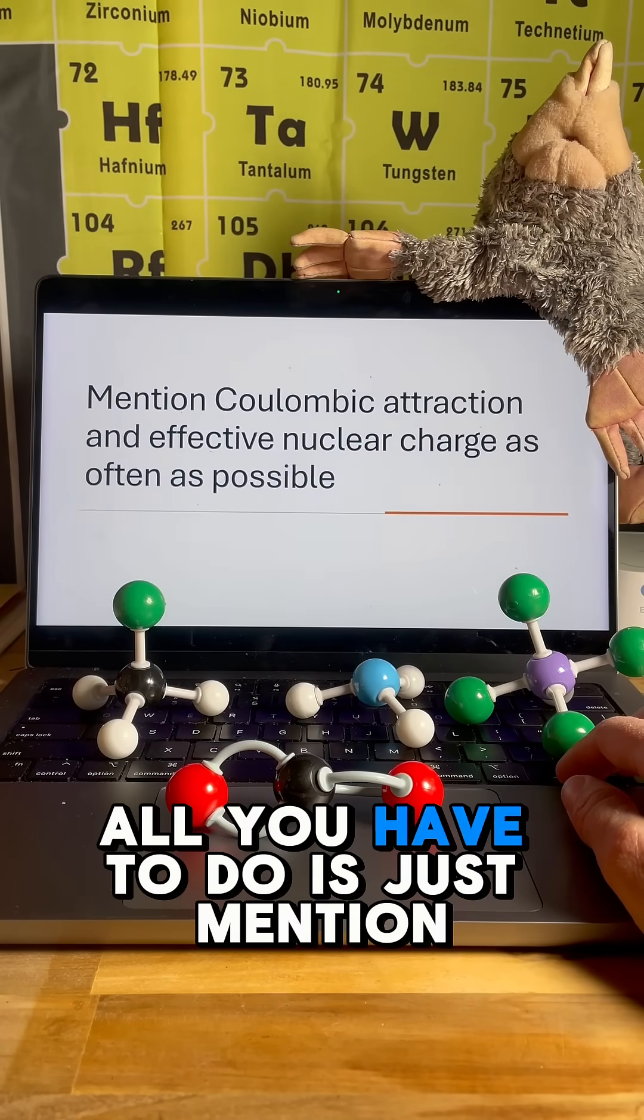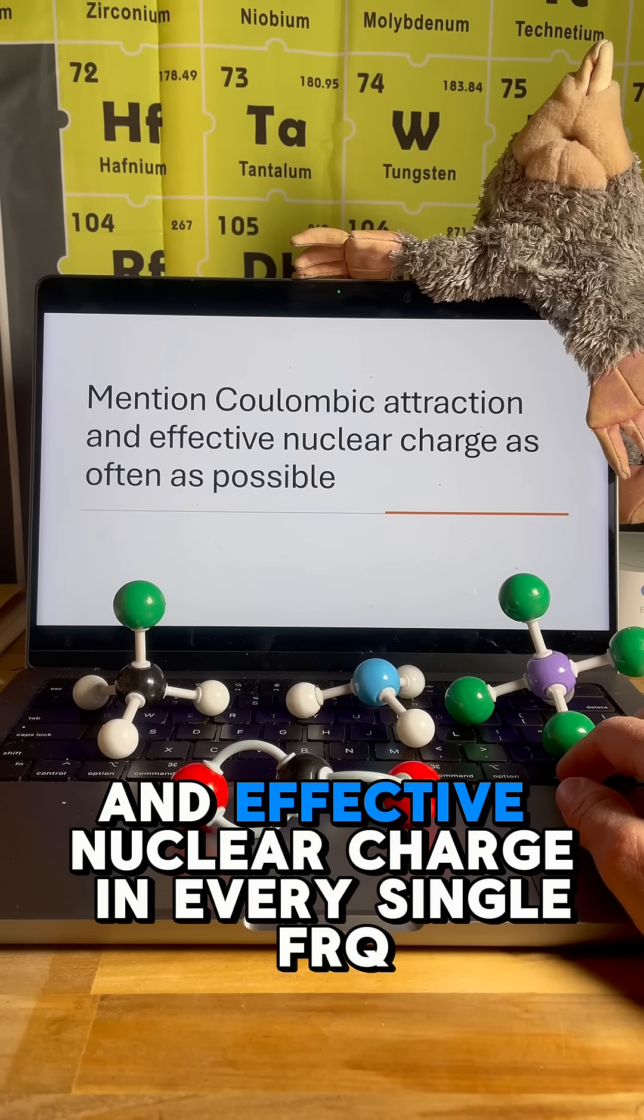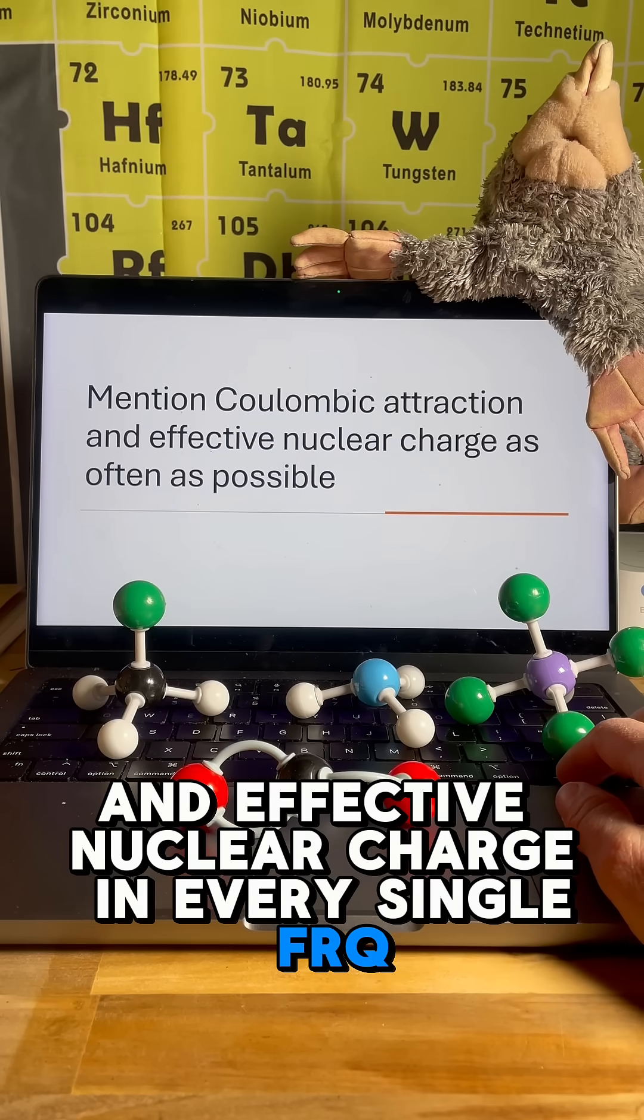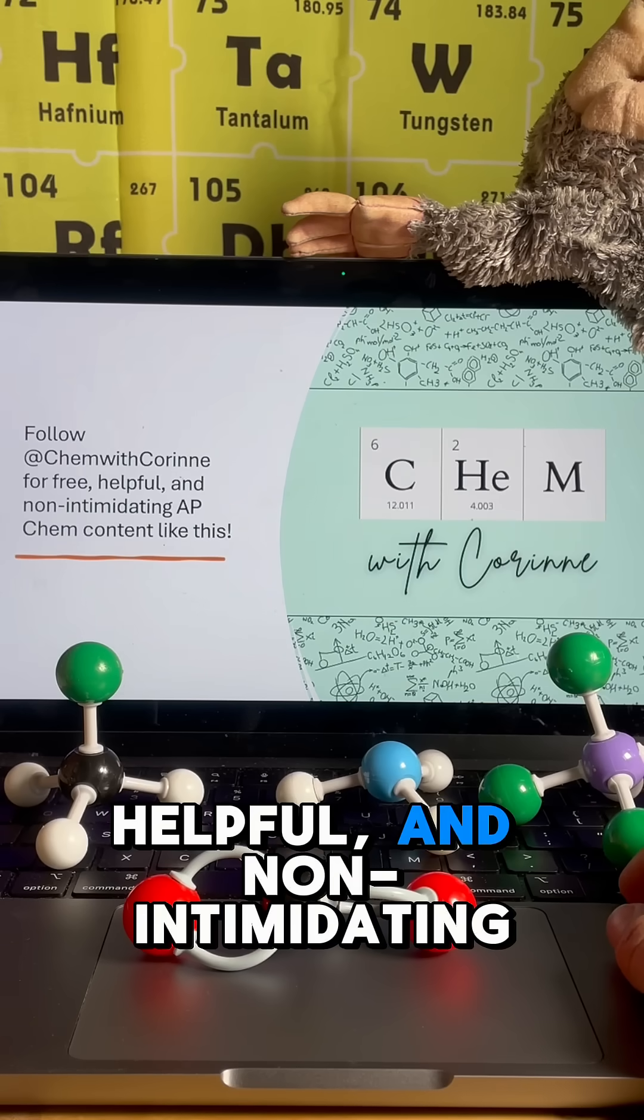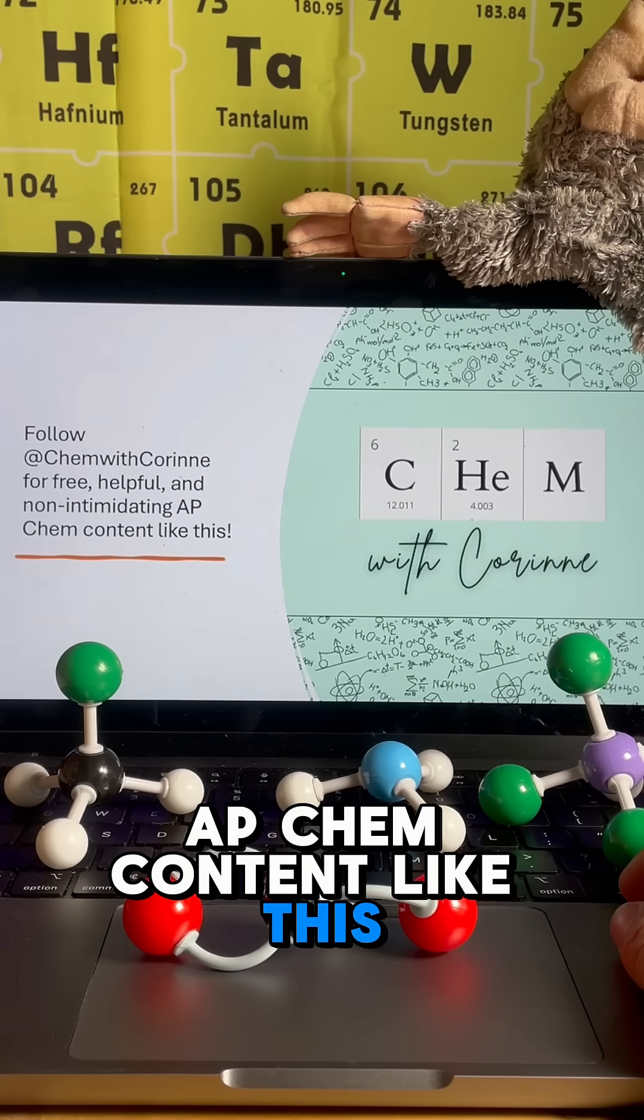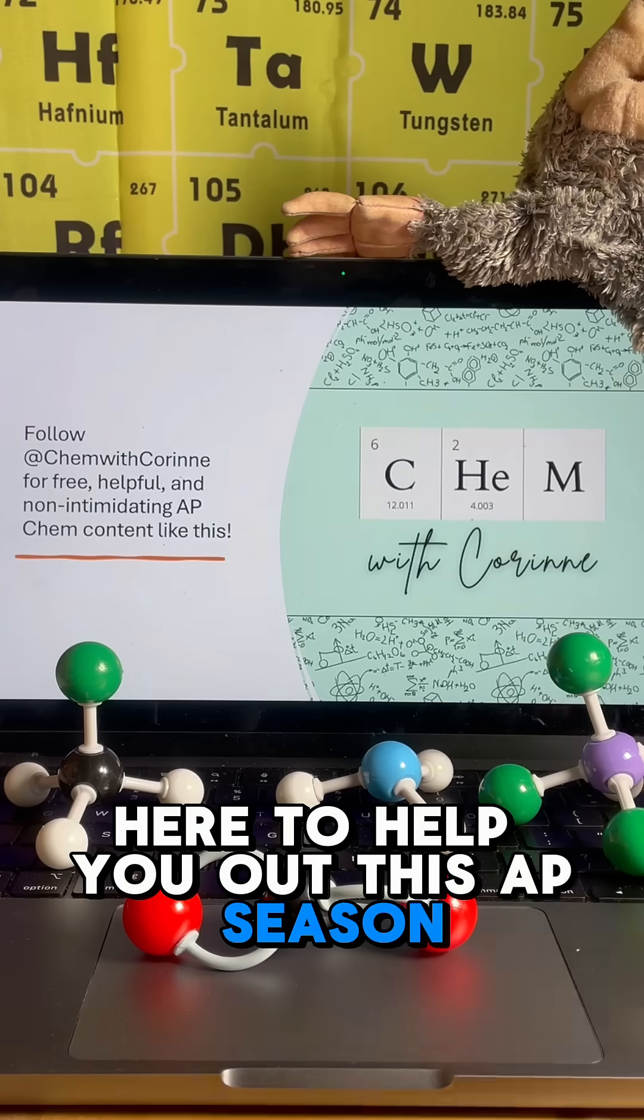If your goal is to get a 5, all you have to do is just mention Coulombic attraction and effective nuclear charge in every single FRQ. Okay, that was a joke, but it is helpful. So follow Chem with Corinne for free, helpful, and non-intimidating AP Chem content like this. Here to help you out this AP season. You've got this.